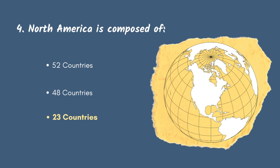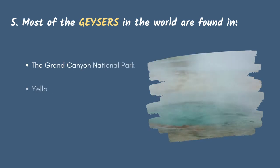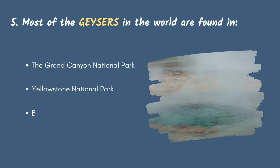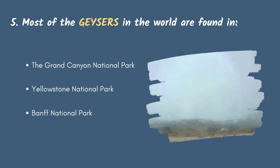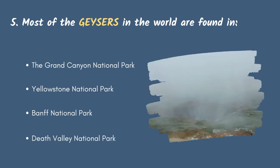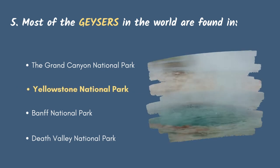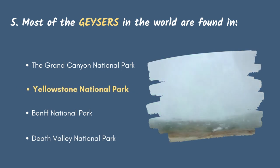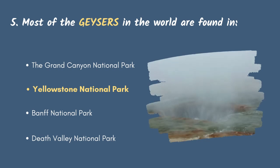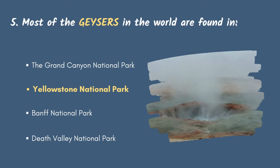Question 5: Most of the geysers in the world are found in the Grand Canyon National Park, Yellowstone National Park, Banff National Park or Death Valley National Park? Yes, you are right — most of the geysers in the world are found in Yellowstone, and that's because the largest magma chamber in the world is found just below Yellowstone, the Yellowstone Caldera. This explains why so many geysers are found there.